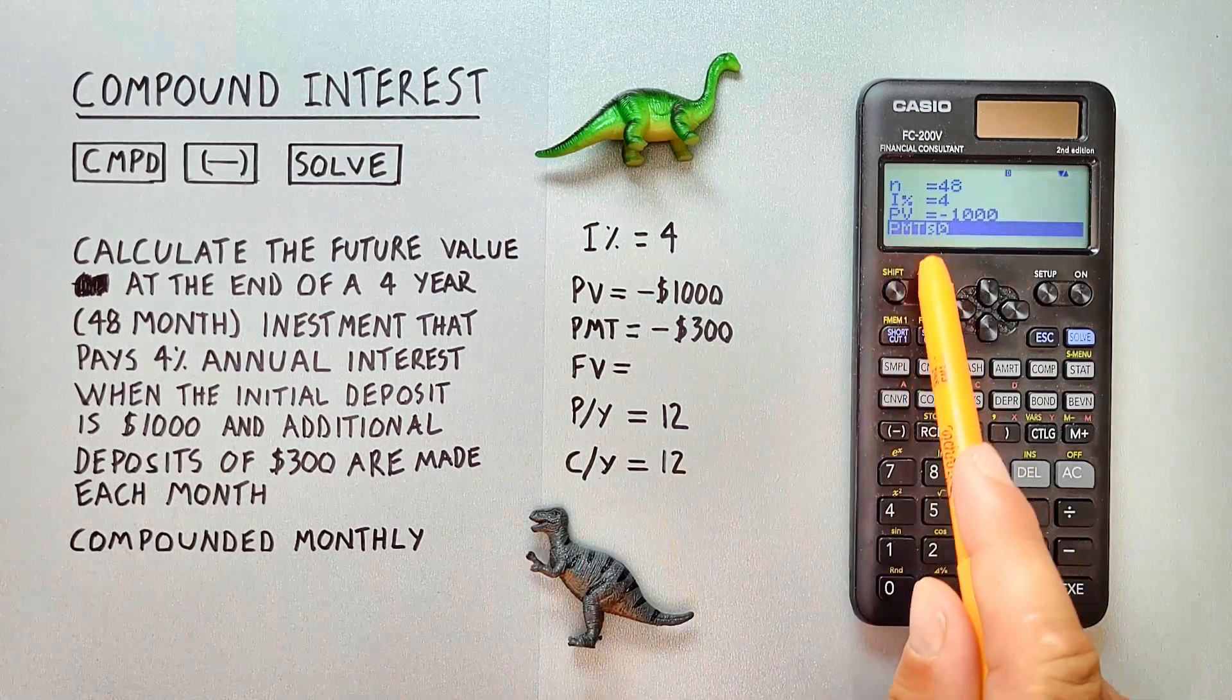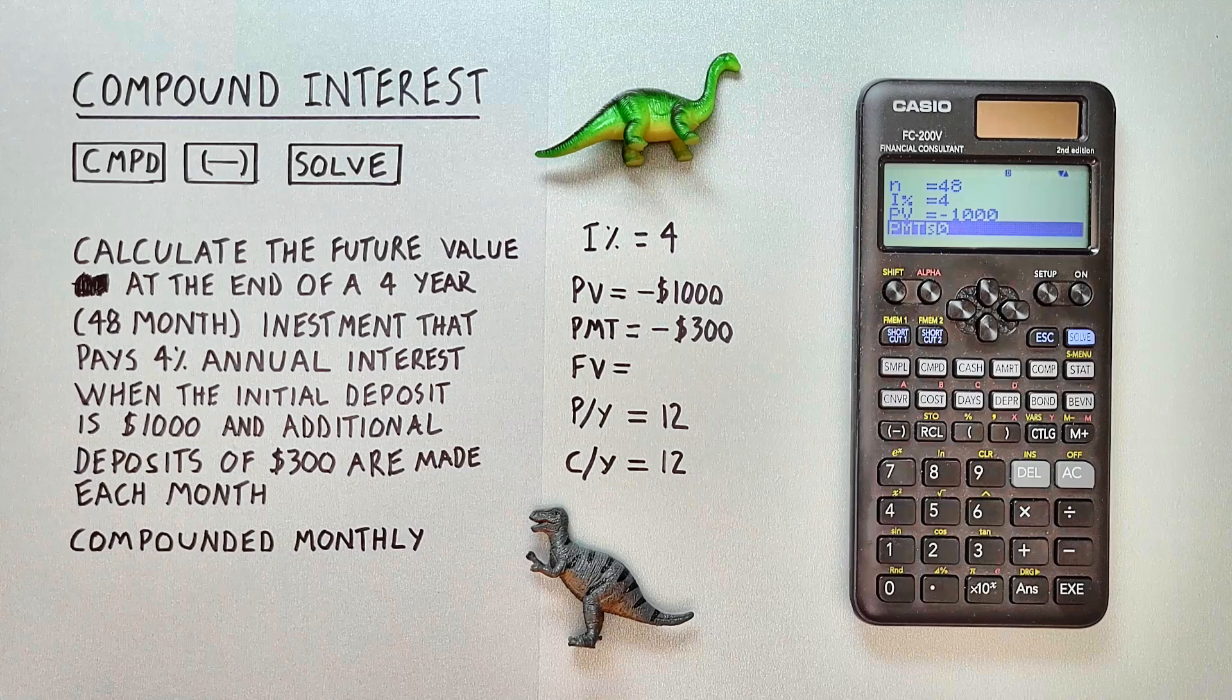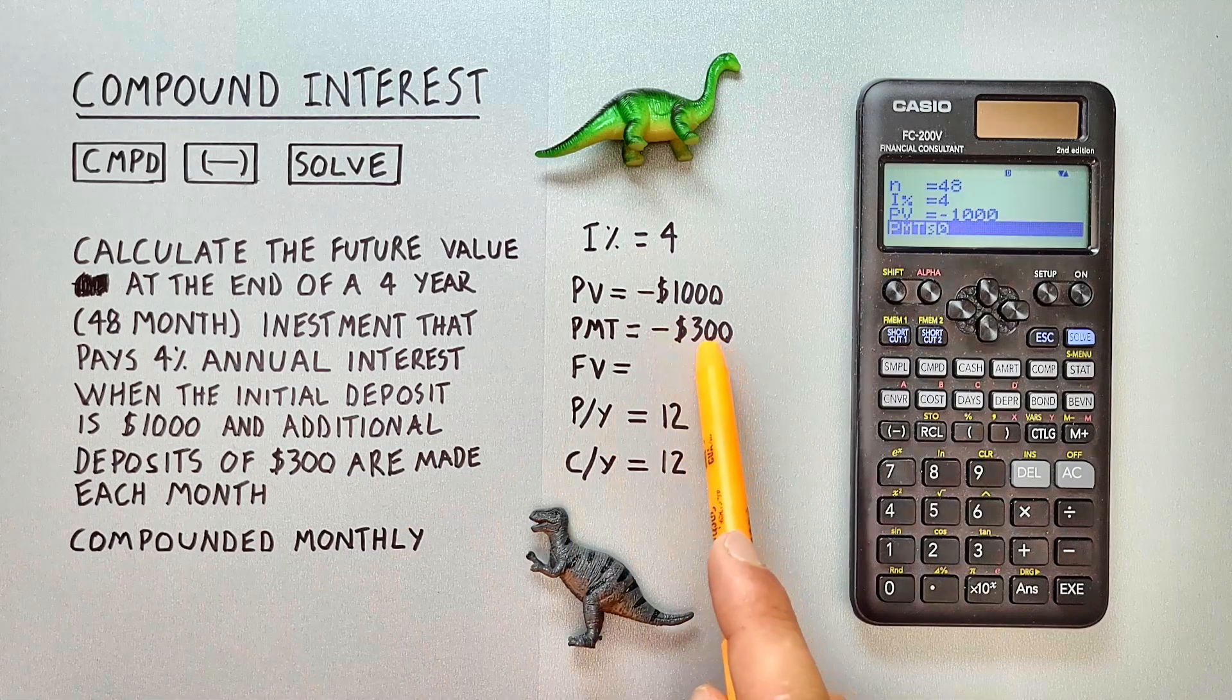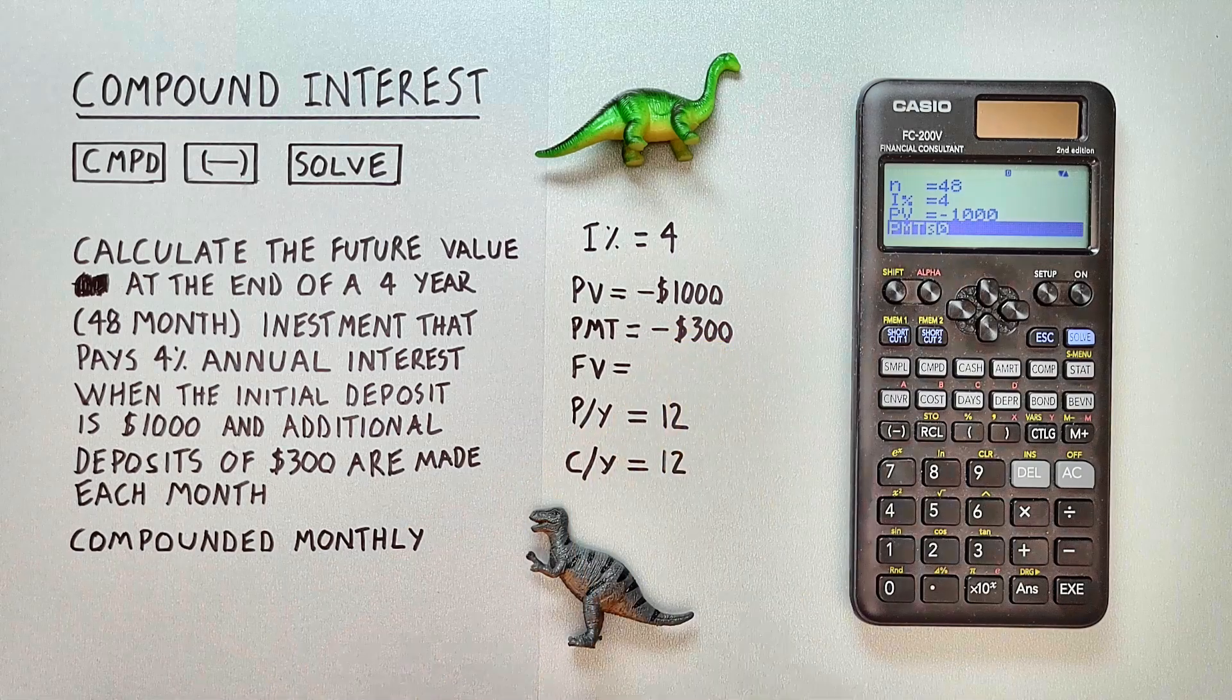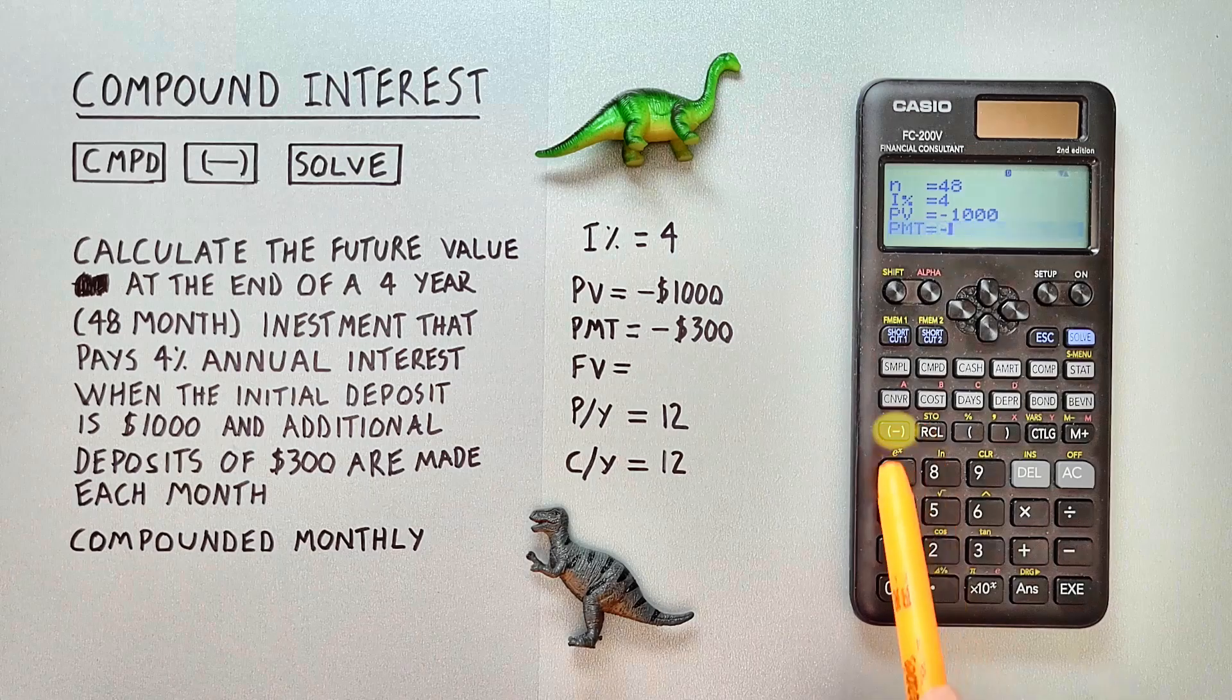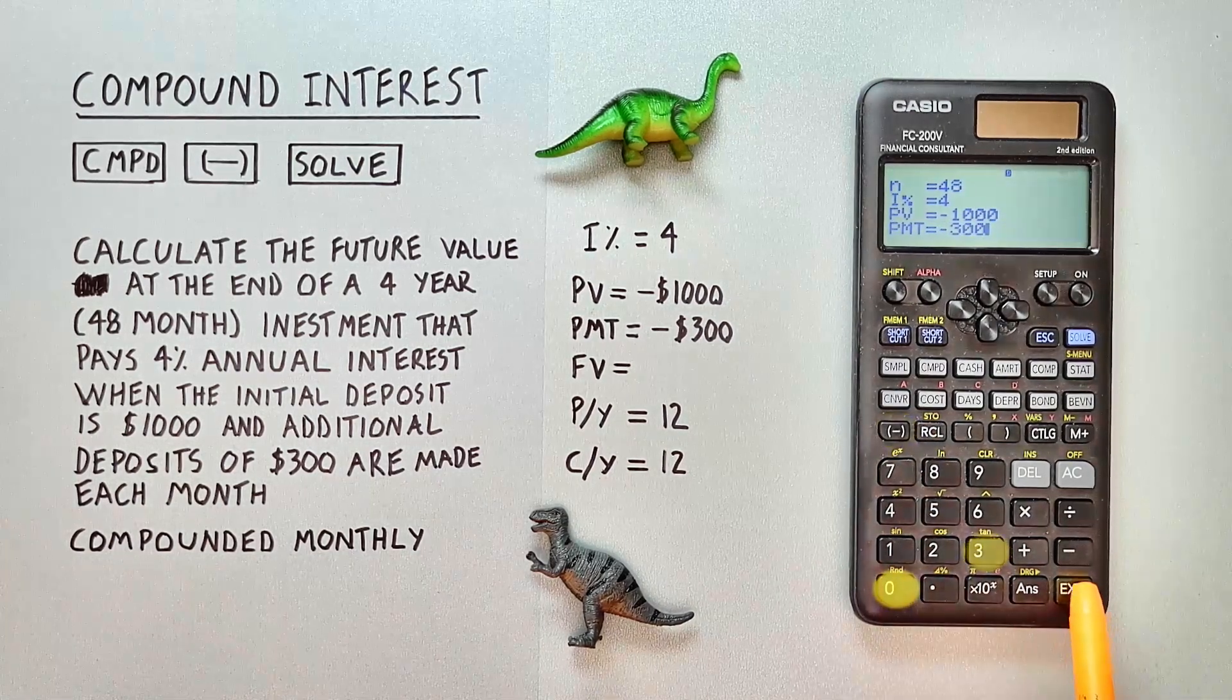And then our PMT or payment amounts. That's $300. And again, we want this as a negative. So we'll hit the negative 300, EXE.